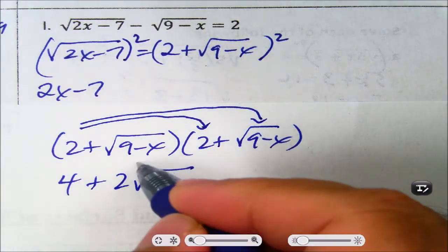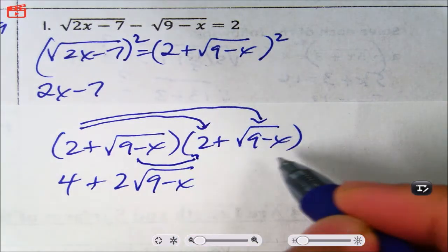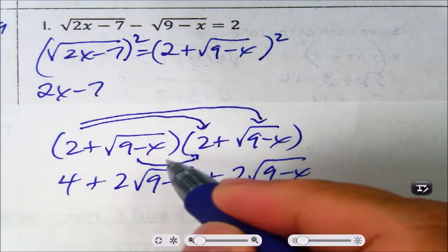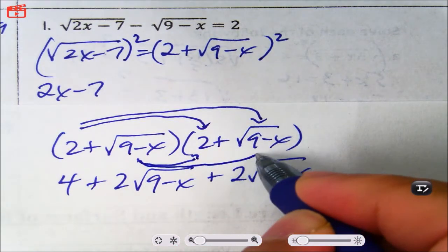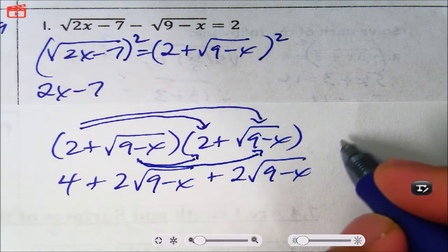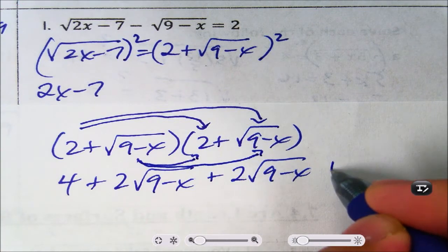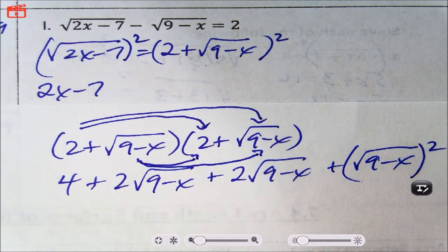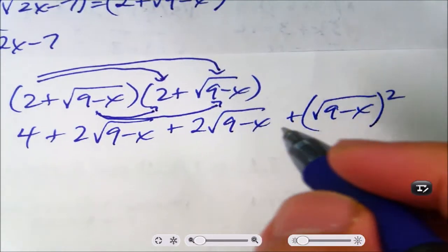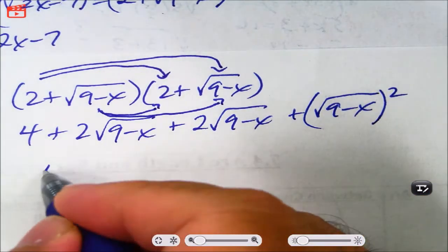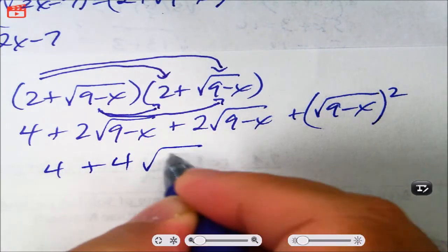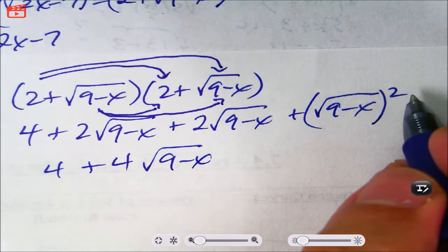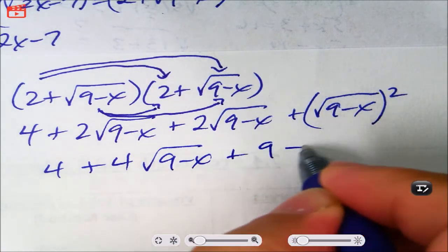Doing this again: square root of 9 minus x times 2 gives another 2 square root of 9 minus x. And then square root of 9 minus x times square root of 9 minus x gives square root of 9 minus x squared. Now let's simplify that: it's going to be 4 plus 4 root 9 minus x. And here the square root and the square cancel each other, and you just get 9 minus x.